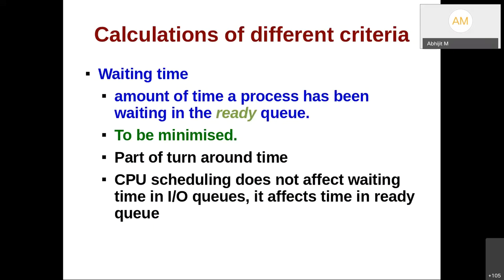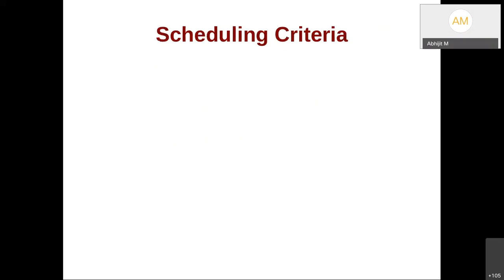Waiting time is easy to calculate: whenever you move a process to the ready queue, note down that time. Whenever the interrupt handler moves it to the runnable state, note down that time and take the difference, accumulating it in a waiting time variable. Scheduling has nothing to do with IO — IO devices work independently of the CPU.